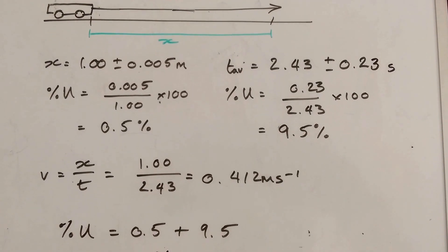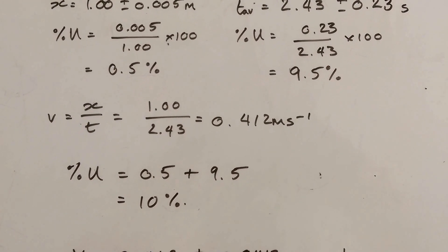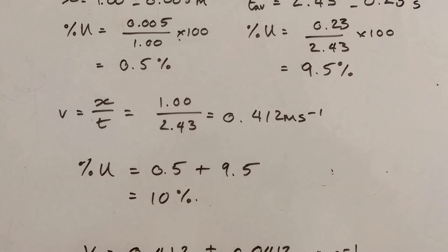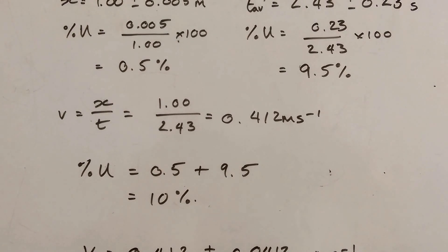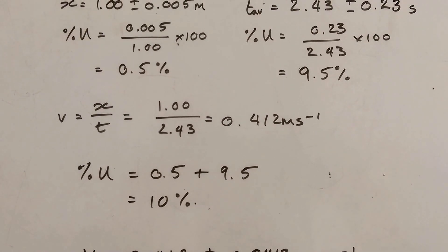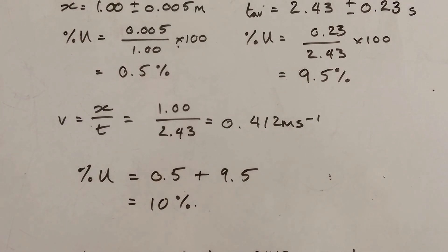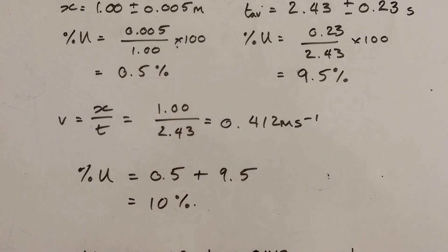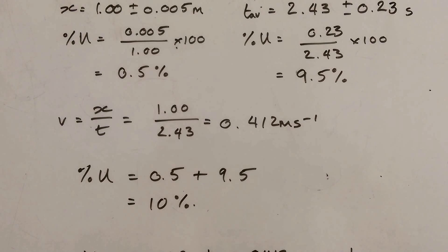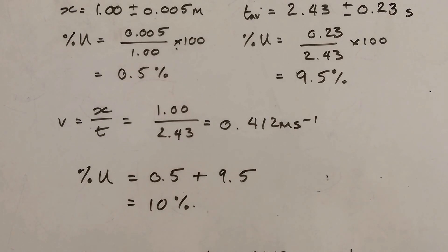So I've used those two values to calculate my average velocity. V is X over T. So 1 metre over 2.43 gives me 0.412 metres per second.